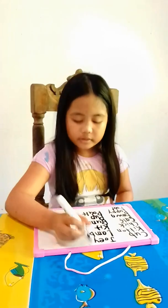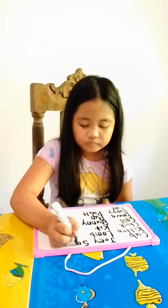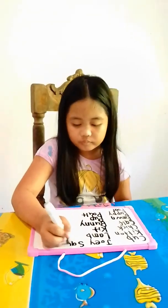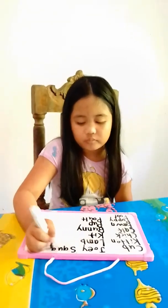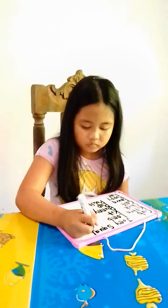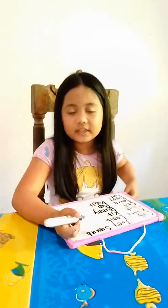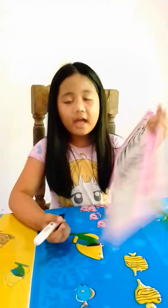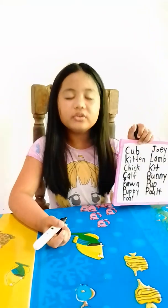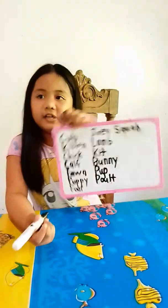The baby of a dove is a squab. The spelling is S-Q-U-A-B.